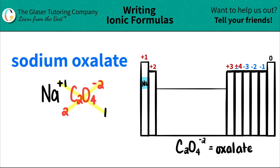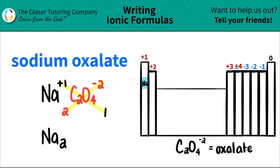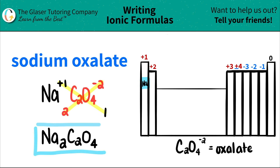So we have Na — they're telling me that I have two of them, so I put a two here. And now since I only have one of the polyatomic, I don't have to use parentheses. So I'm going to say C2O4, and since there's only one, I don't even have to write the one. So sodium oxalate is Na2C2O4.